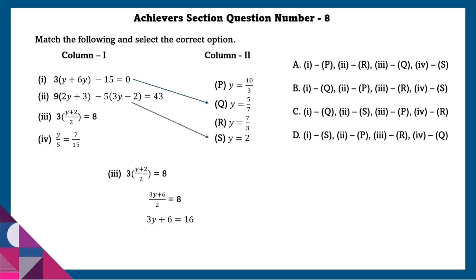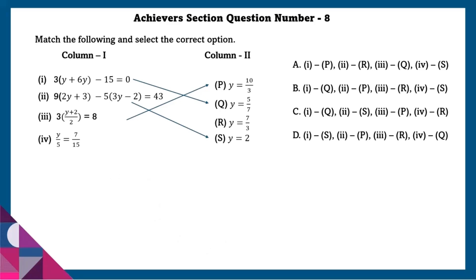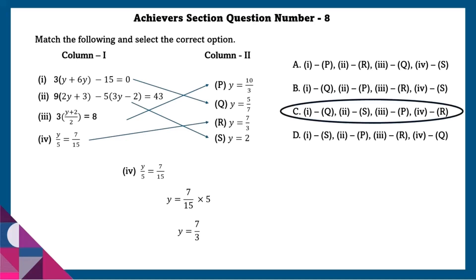Third equation: simplifying by taking 3 inside gives 3y plus 6 divided by 2 equals 8. Bringing 2 to the other side gives 3y plus 6 equals 16, then 3y equals 10, so y equals 10/3. Fourth: similarly simplifying, we get y equals 7/3. So the answer is C.